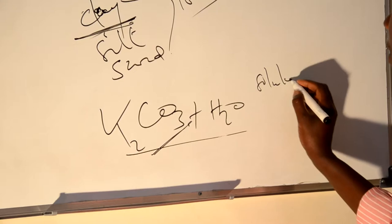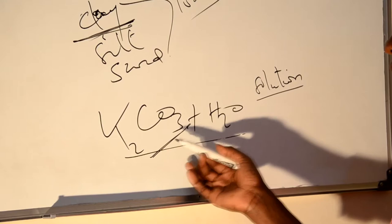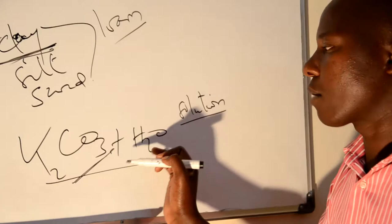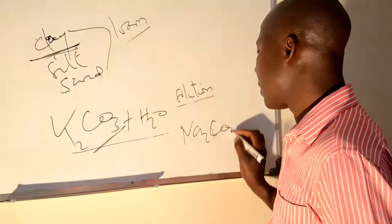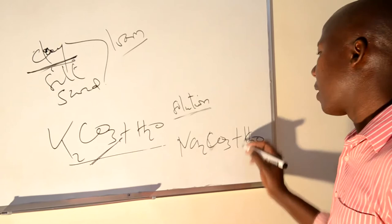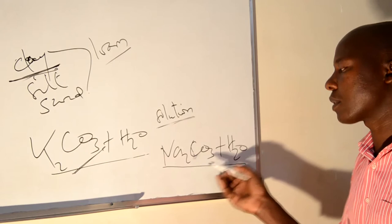Wherever this element will be dissolving, it can change into solution. The water is reactive with this element, and wherever it comes into contact, can cause a change in appearance and become in solution manner or in liquid form. Even sodium carbonates, whatever will be reacted with water, can really result in solution, because this element is reactive with water. Whenever we talk about solution, this is like a liquid form.